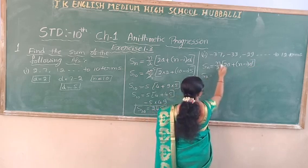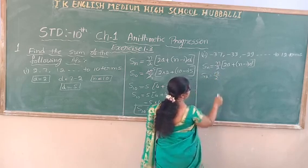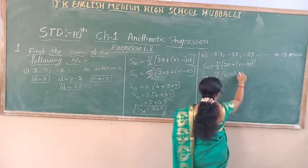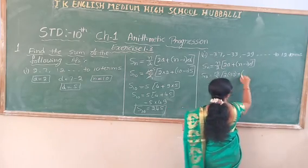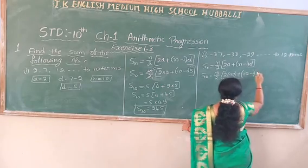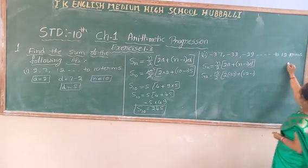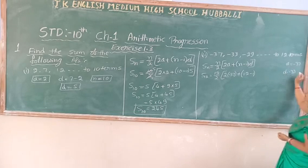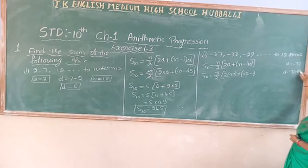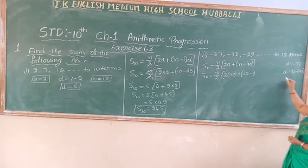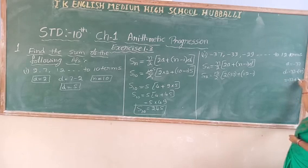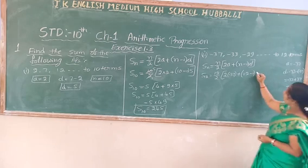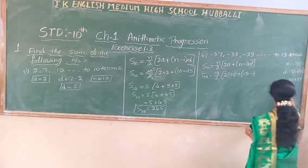n is equal to 12 terms. a value: minus 37. d value: second term minus first term, that is minus 33 minus of minus 37. Be careful: minus 33 subtract minus 37 becomes minus 33 plus 37, which gives d equals 4. Substitute d value as 4, a value as minus 37, n value as 12.